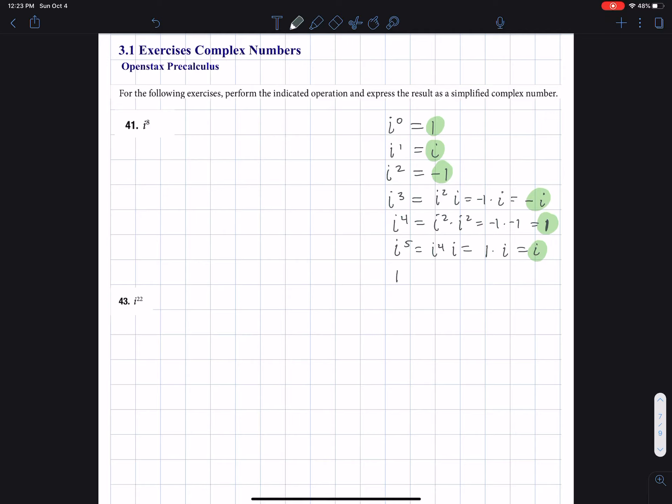We see that we're going to follow the same patterns. So I get i to the fourth times i squared. If I take out i to the fourth, I'm always going to get one. So I get one times i squared, but i squared is negative one.